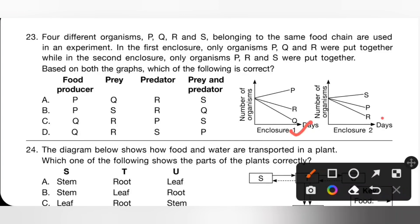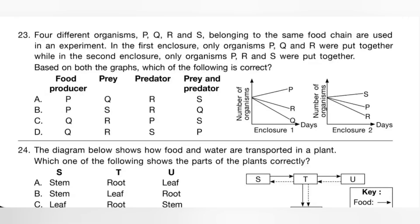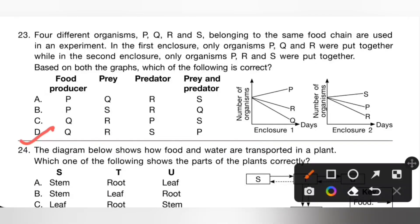P is both predator for R and prey for S, while S is a top predator. So: Q is food producer, R is prey, P is both predator and prey, and S is predator. Option D is the correct answer.